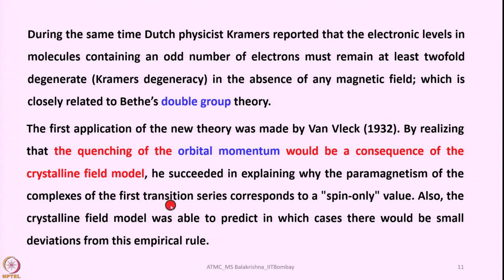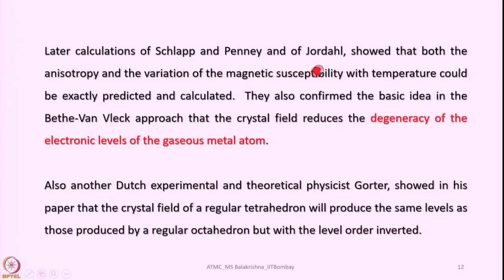Crystal field theory explains small variations observed in magnetic properties involving orbital momentum. Later, calculations by Schlapp, Penney, and Jordan — all physicists — showed that both the anisotropy and the variation of magnetic susceptibility with temperature could be exactly predicted and calculated. They further confirmed the basic idea in the Bethe–Van Vleck approach: that the crystal field reduces the degeneracy of the electronic levels of the gaseous metal atom, destroying or removing the degeneracy of the d-orbitals.